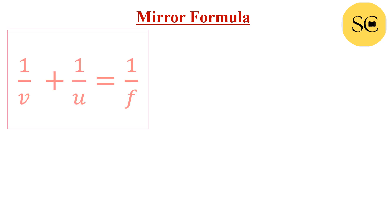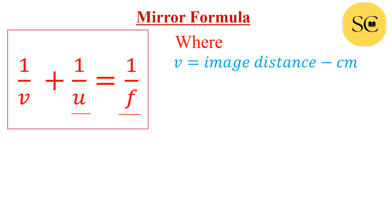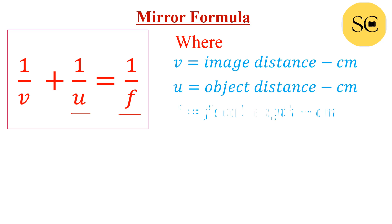First is the mirror formula: 1/V + 1/U = 1/F. This is the mirror formula. Where V is image distance (unit: centimeter), U is object distance (unit: centimeter), and F is focal length of the concave mirror or convex mirror (unit: centimeter).